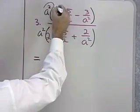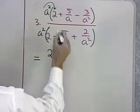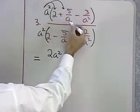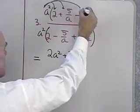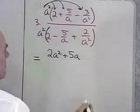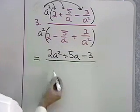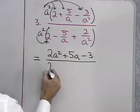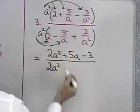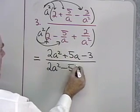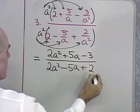When I do that, I have a squared times 2, which is 2a squared; a squared times 5 over a, which is 5a; and a squared times 3 over a squared, which is 3. That will all be divided by a squared times 2, which is 2a squared; a squared times 5 over a, which gives minus 5a; and a squared times 2 over a squared, which is 2.